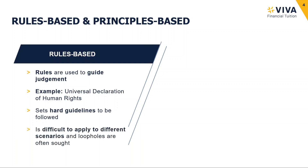The issue with rules is it can be difficult to apply them to different scenarios. Sometimes you might have a situation that isn't governed by one of the rules, and therefore you simply don't know what to do. It also means people seek loopholes — they look for things where there isn't something specifically saying you can't do something, and look for ways around rules.